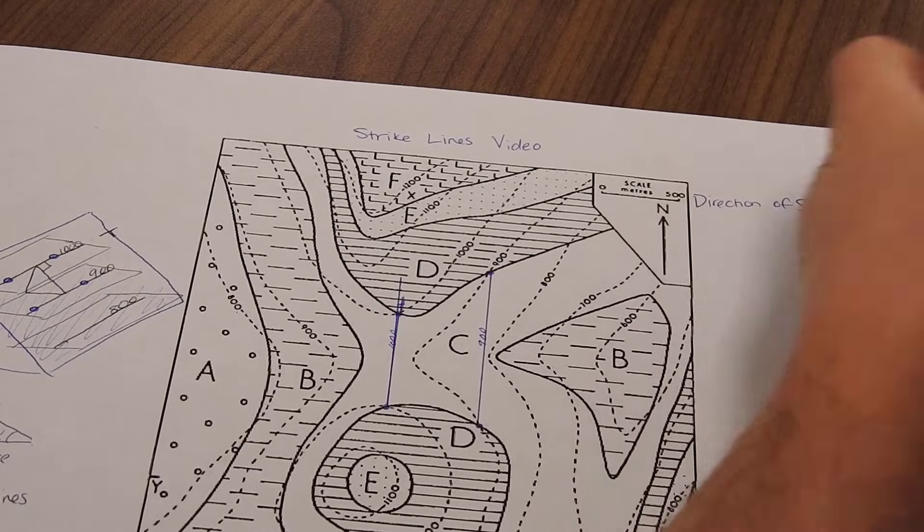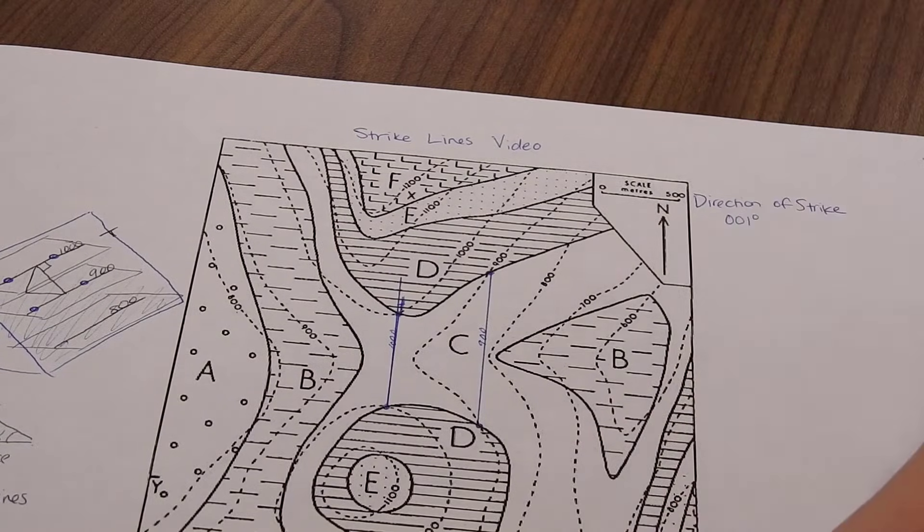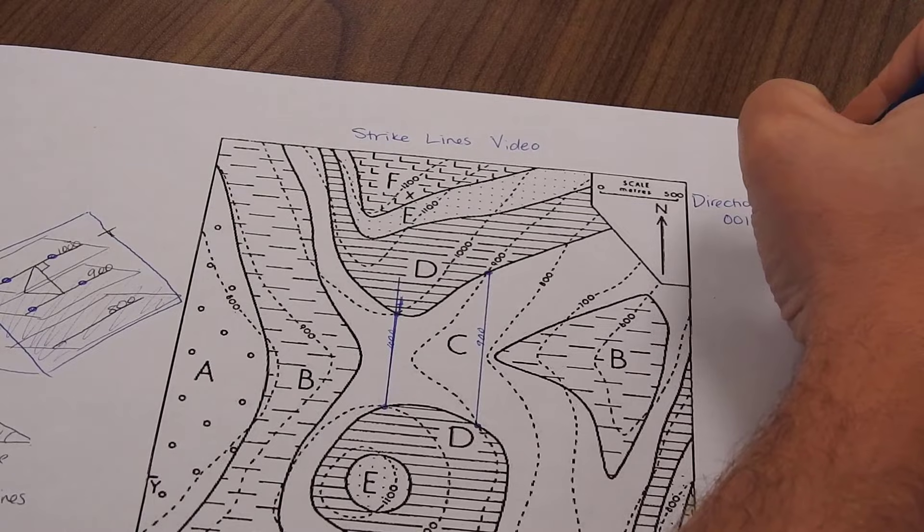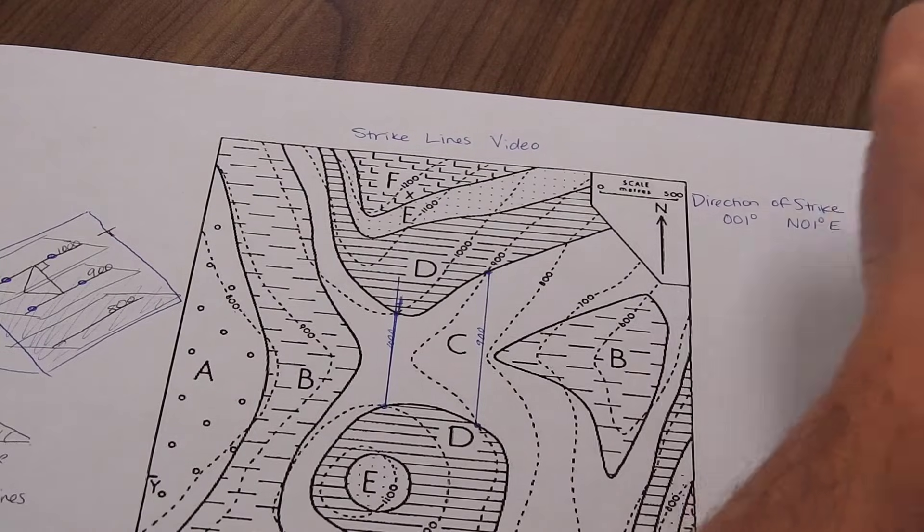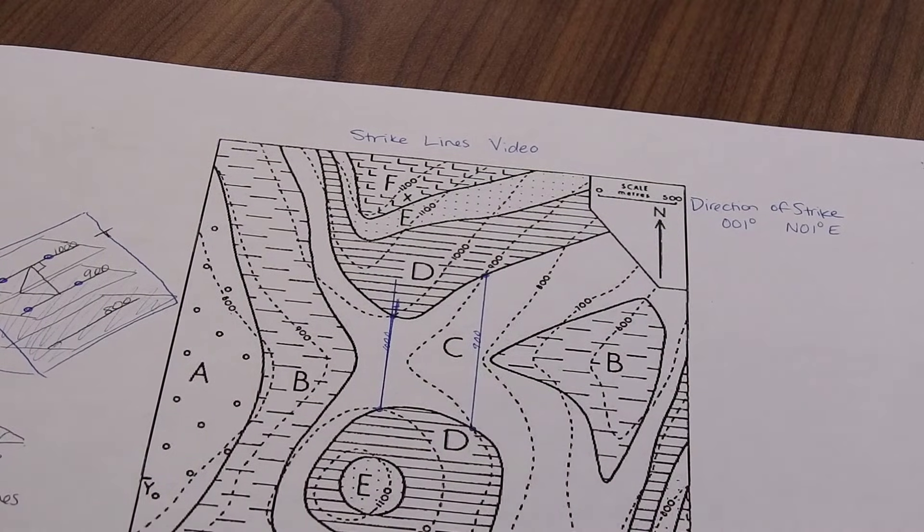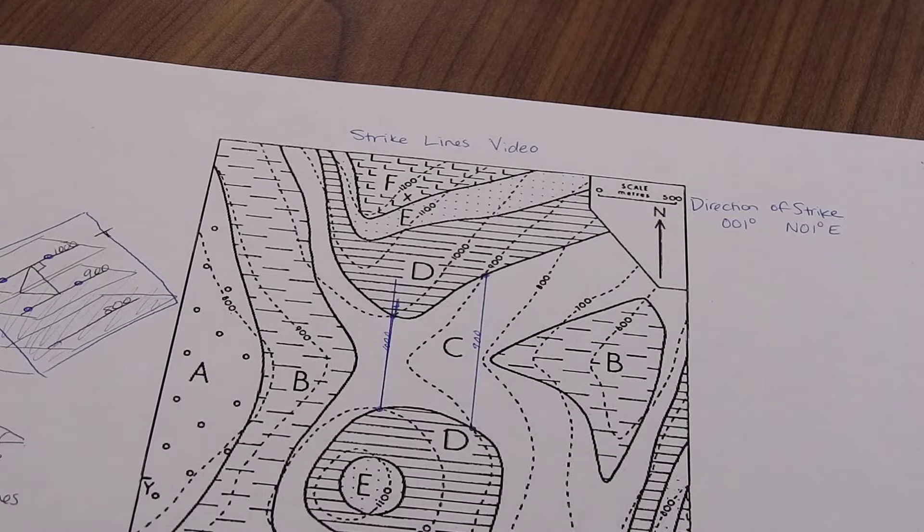These are just very north-south striking units. So I'm going to say my direction of strike is zero, zero, one degree. You could also write north, zero, one degrees east. And now let's find our dip amount and dip direction.